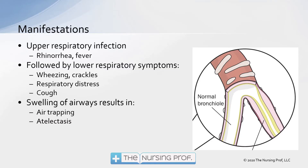Symptom-wise, we'd anticipate that the patient will have an upper respiratory infection that precedes the bronchiolitis — runny nose, fever; symptoms of a cold. This is then followed by lower respiratory symptoms such as wheezing, crackles, respiratory distress, and cough. Swelling of the airways results in air trapping and atelectasis.